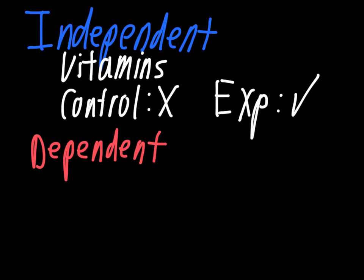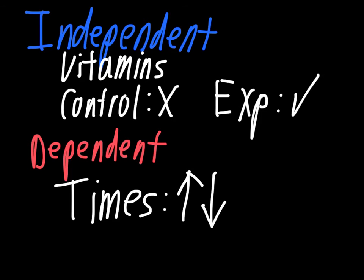The important thing to remember with our dependent variable is it's the times. And what we're hoping is that the times that the runners produce are going to be impacted by whether or not they're taking the vitamins. What we're looking at now is whether or not the times of the runners either go up or go down. We're not really worried about that in comparison to each other. We're worried about their times in comparison to how they ran previous to the beginning of the experiment.